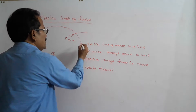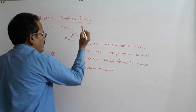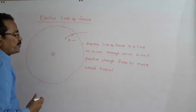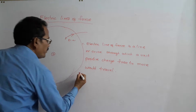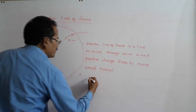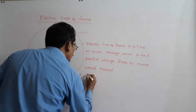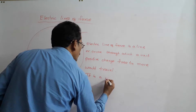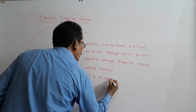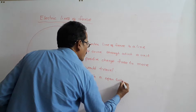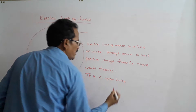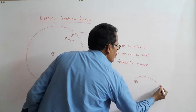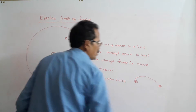That is point number 1 — its definition. Next, point number 2: Electric Lines of Force is an open curve, specifically an open curve from a positive charge to a negative charge.